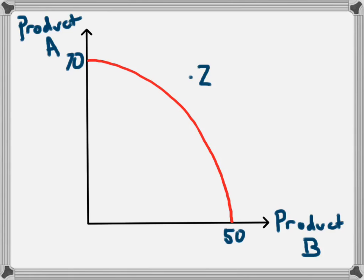It is impossible for the economy at this point in time to operate at point Z. To move to a point outside the production possibility frontier, there would need to be one of two things. The first could be an increase in the number of resources in the economy — such as finding new natural resources or a higher population which gives more human resources — and that would allow the production possibility frontier to shift outwards.